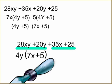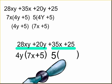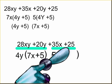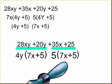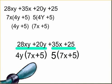The two remaining terms are 35x and positive 25. We can now factor out a 5 from both sides. 5 goes into 35x 7x times. 5 goes into 25 5 times.